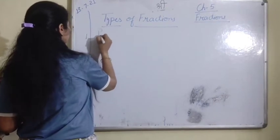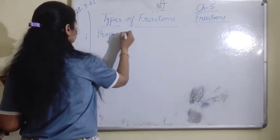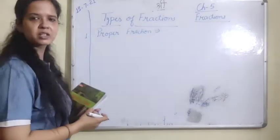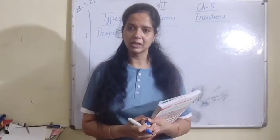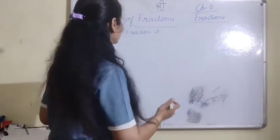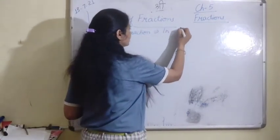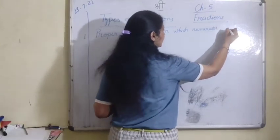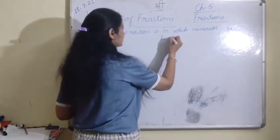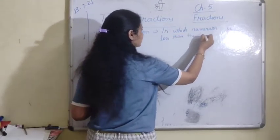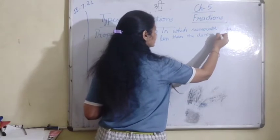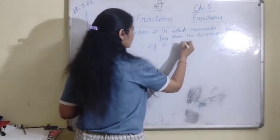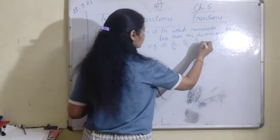The first type is proper fraction. Proper fraction mein numerator denominator se chota hota hai — in which the numerator is less than the denominator. For example, fractions like 1 upon 4 or 3 upon 7 are proper fractions.